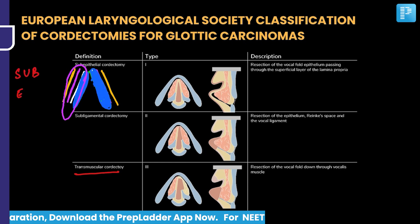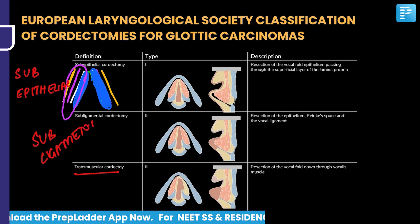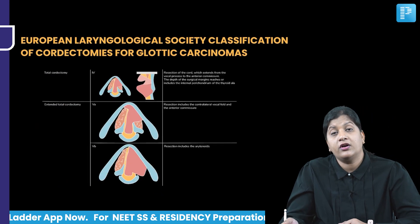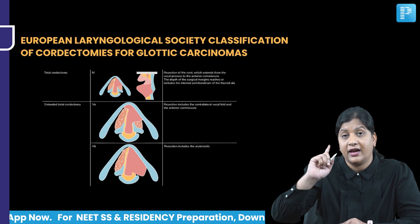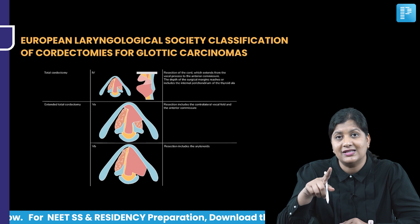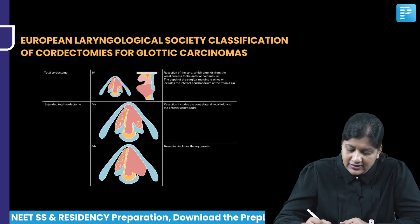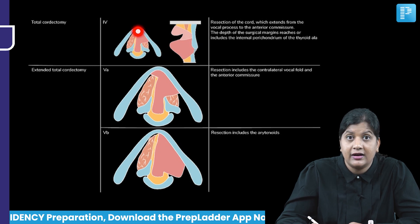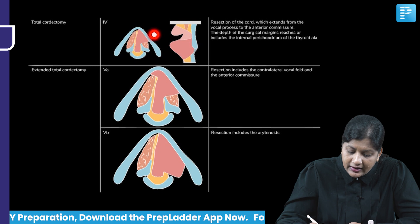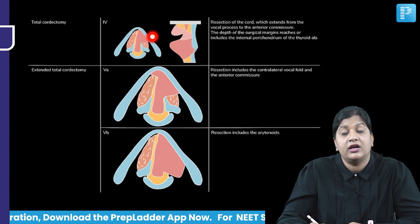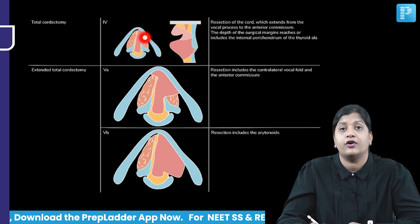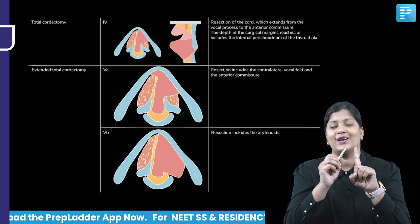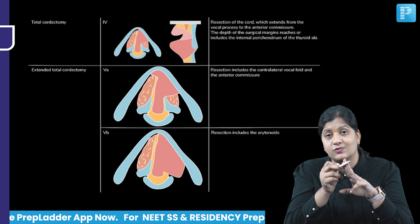So the first was sub-epithelial chordectomy, the second is sub-ligamental chordectomy, and the third is transmuscular chordectomy. Then we have total chordectomy. In total chordectomy, you resect the entire epithelium, superficial lamina propria, vocal ligament, and vocalis muscle up to the level of the thyroid cartilage. The extension of resection goes from the vocal process to the anterior commissure, and it includes the inner perichondrium of the ala of the thyroid cartilage. That is total chordectomy.